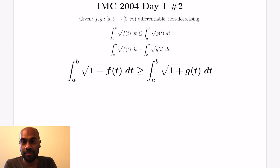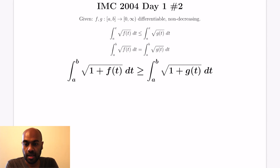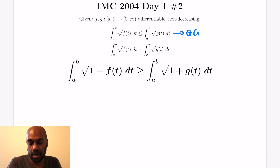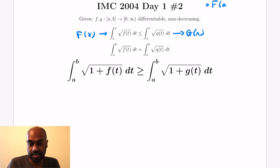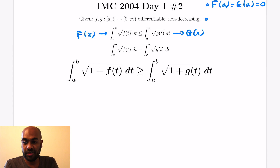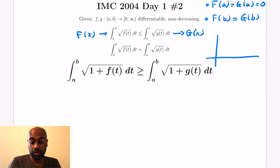Our last problem is from the International Math Competition 2004, Day 1, Number 2. It involves two functions f and g that map the interval a,b to the non-negative real numbers, assumed to be differentiable and non-decreasing. We have functions capital F and capital G which integrate from a to x of the square root. We're given an inequality involving them, and we notice that F of a and G of a are 0, while F of b and G of b are equal.